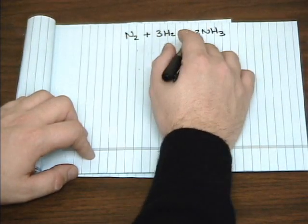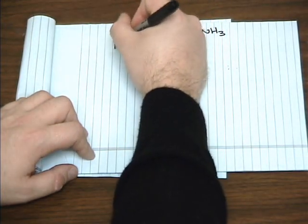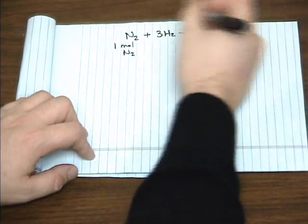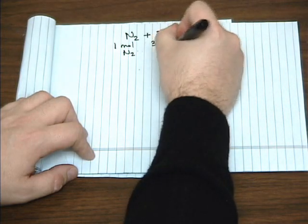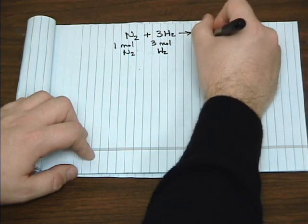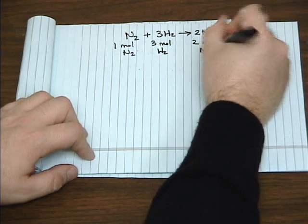Or if you think of these coefficients on the mole scale, one mole of N2 will react with three moles of H2 and produce two moles of NH3.